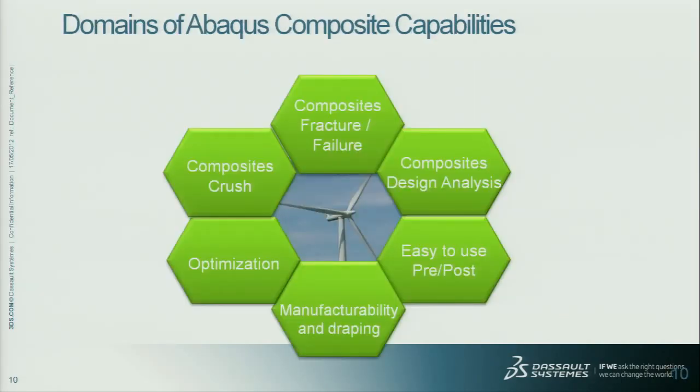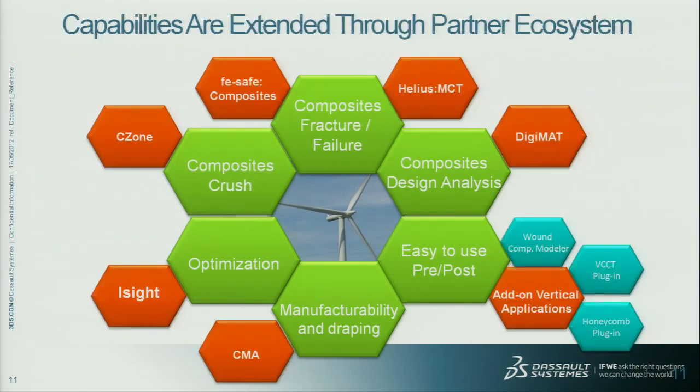Abacus has a very large breadth of capabilities: multiple failure criteria like Puck's and Hashin, multiple capabilities for static analysis, dynamic analysis, impact, and low-speed analysis. We can organize these into composites fracture and failure, composite design, and composites crush optimization. We can extend this further when we include our partner applications. We have many partners here this week who have extended capabilities to enhance the composite simulations you all do. I'm going to talk about a few of them today — they are here so you can get more details after the meeting.